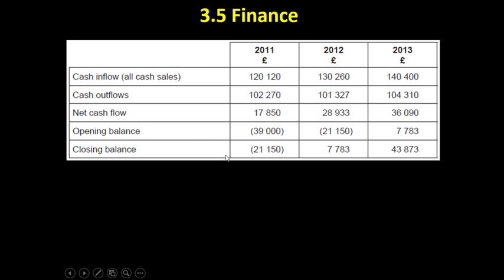Here's a simpler example — this is from the January 2011 Business Studies paper, though it's a yearly rather than monthly forecast. You can see the cash inflows and outflows. The difference between those two figures is £17,850 net cash flow. They had an opening balance of minus £39,000, and adding £17,850 gives the closing balance. That closing balance then becomes the opening balance for the following period, and so on.